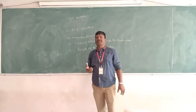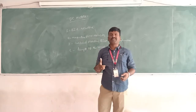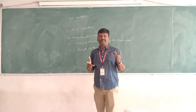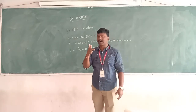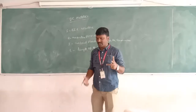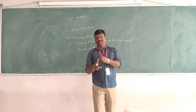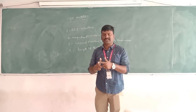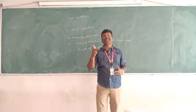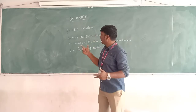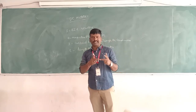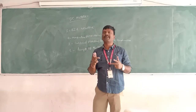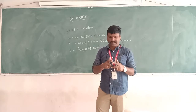In the case of a generator, the EMF direction is explained with the help of Fleming's right hand rule. But in the case of a motor, Fleming's left hand rule is used. In both rules, the thumb indicates the motion of the conductor and the forefinger indicates the flux line direction. In the left hand rule, the middle finger indicates force direction; in the right hand rule, the middle finger indicates the induced EMF direction.